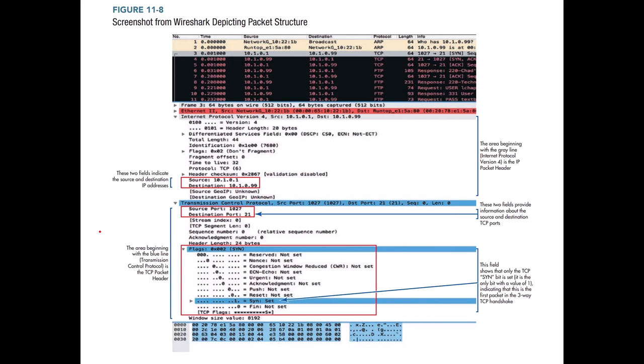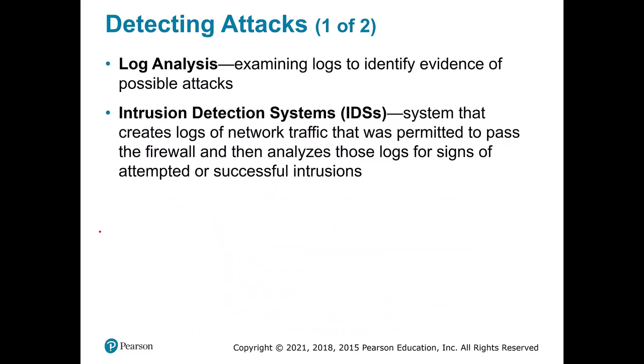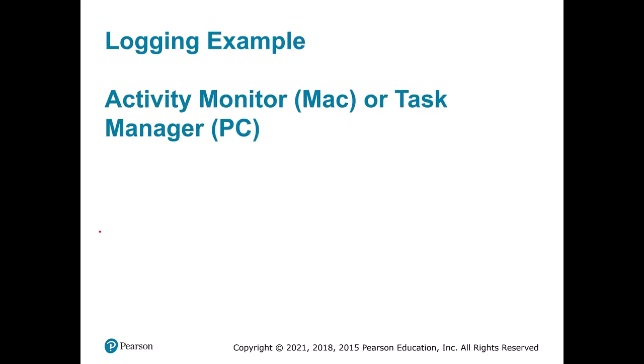An IDS might detect new traffic between two endpoints that indicates a problem and raise an alert to the network administrator. This is log analysis and IDS in action. You can also open Activity Monitor on a Mac or Task Manager on a PC and see all the different software running on your computer — you'll find a ton of stuff happening that you don't know about. That's why we need these systems, because a lot of bad software hides among the good.